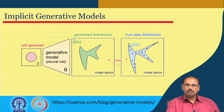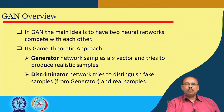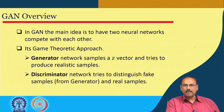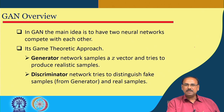In generative adversarial network (GAN), the main idea is to have two neural networks competing with each other — it is a game-theoretic approach. One network is the generator, which samples z from the latent space and tries to produce a realistic sample. The other is the discriminator network, which is adversary to the generator — that is why it is called adversarial. The discriminator tries to distinguish between fake samples from the generator and real samples fed to it.